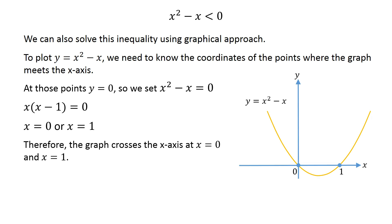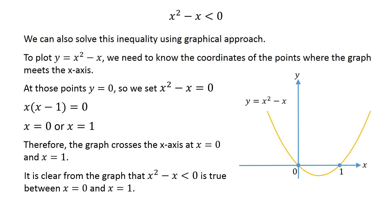Since the coefficient of x squared is positive, the parabola opens upward. It is clear from the graph that the given inequality is true between x equals 0 and x equals 1. Thus the solution set is the open interval from 0 to 1.